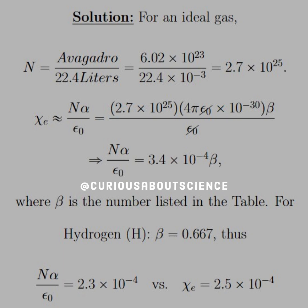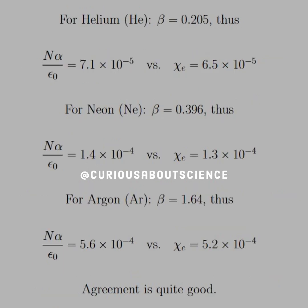Not as close as it could be, but not far off for 10 to the negative 4. For helium, we have 7.1 times 10 to the negative 5 versus 6.5 times 10 to the negative 5. For neon and argon, we see similar results respectively. The agreement is quite good overall.